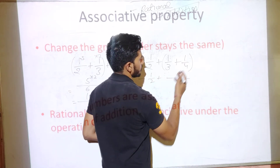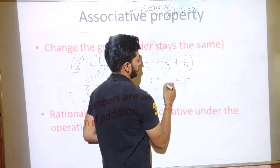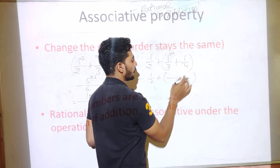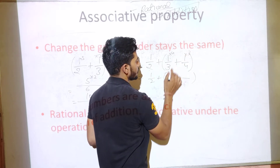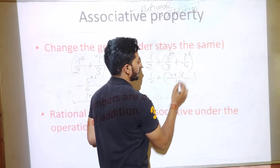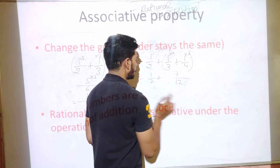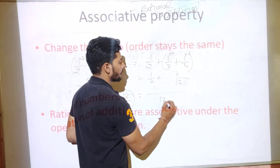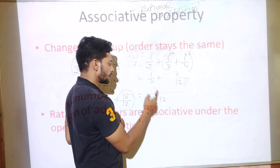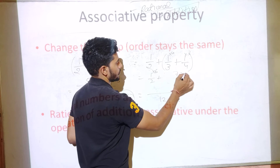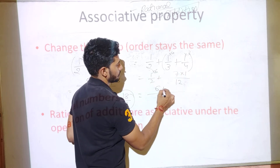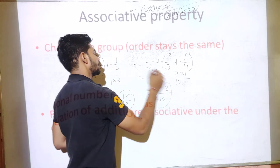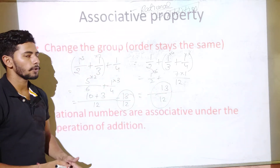Now for the second grouping: 1/2 + (1/3 + 1/4). The LCM of 3 and 4 is 12, so 1/3 + 1/4 = 4/12 + 3/12 = 7/12. Then 1/2 + 7/12: the LCM is 12, giving 6/12 + 7/12 = 13/12. The same answer, 13/12, is obtained in both cases.